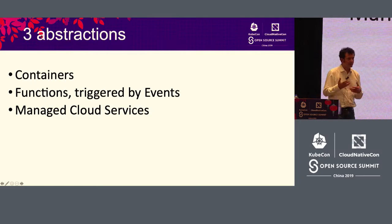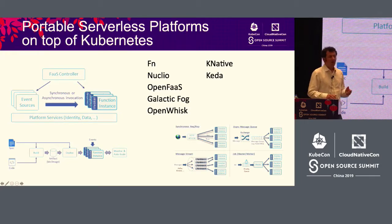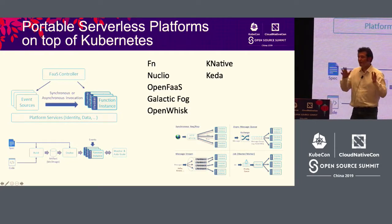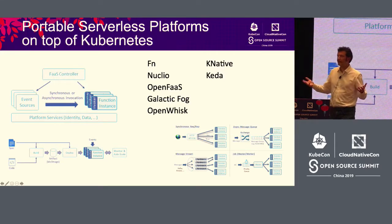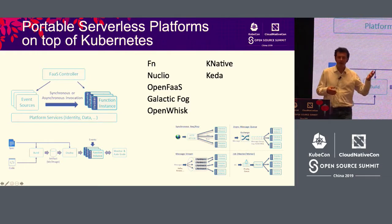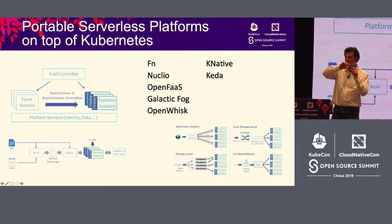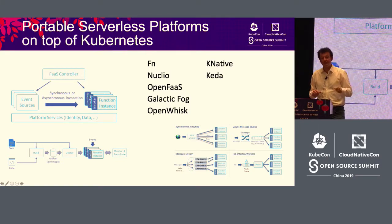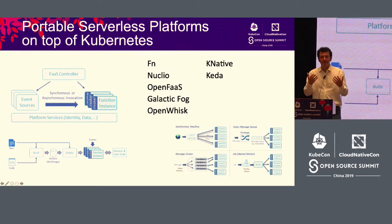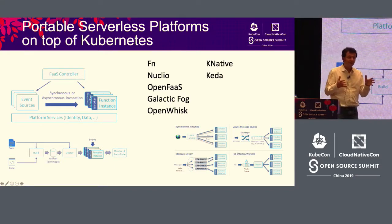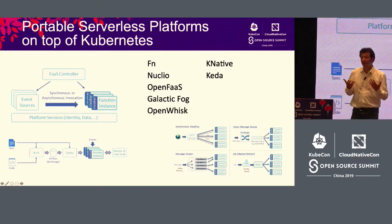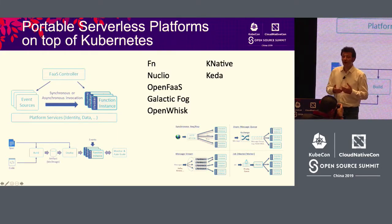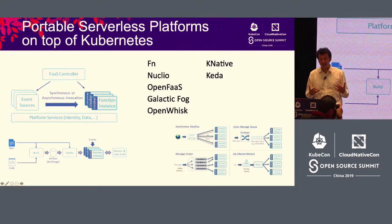These three abstractions — containers, functions triggered by events, and managed cloud services — over the past three years have seen a lot of portable serverless platforms emerge on top of Kubernetes. You have things like the FN project by Oracle, which has a nice way of composing functions; Nucleo, which is super high-performance and suited for intensive data processing; and OpenFaaS, which is like the Swiss Army knife of serverless platforms — it can do a lot of things and is super easy to get started with.